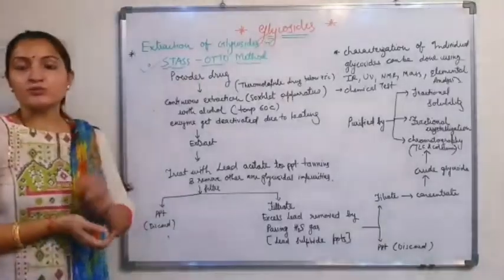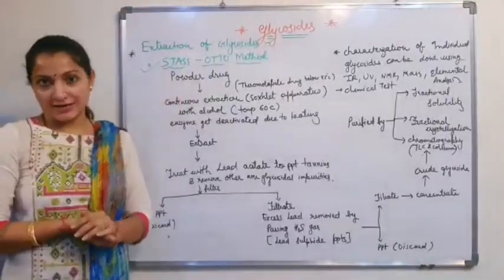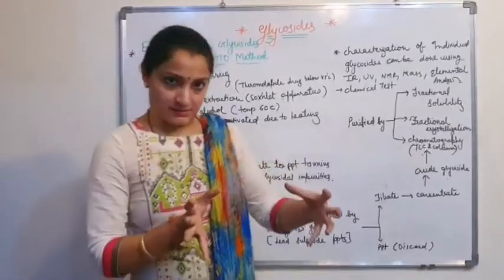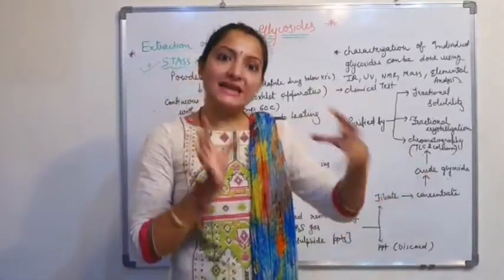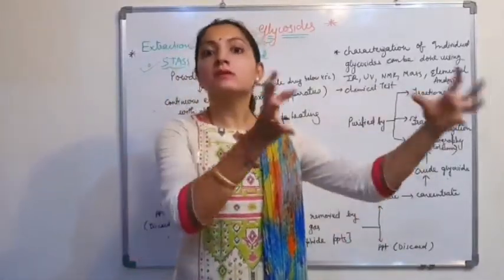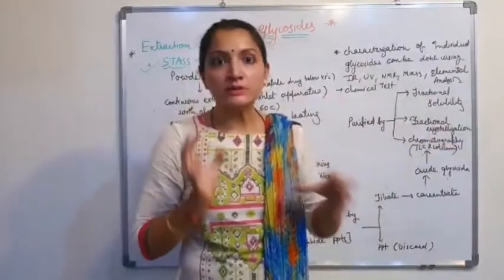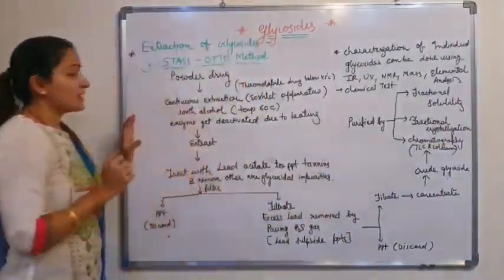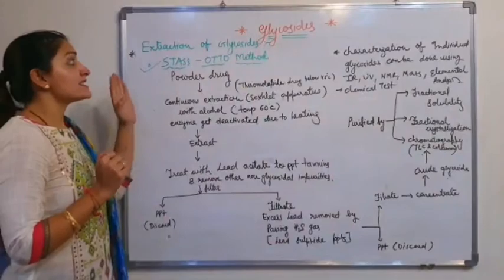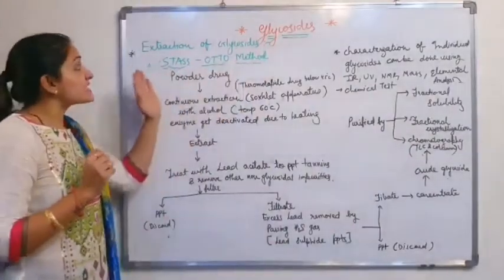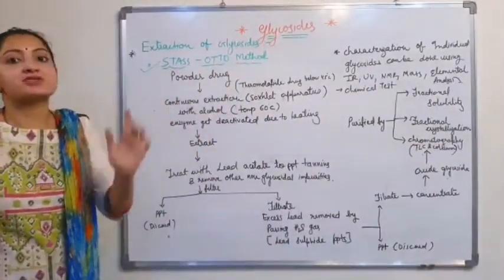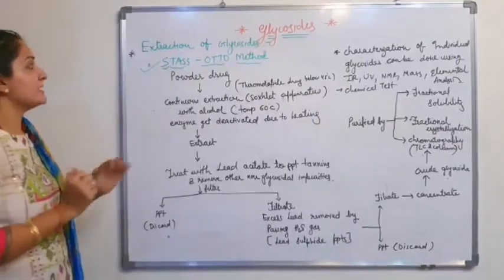Moving on to the next topic, which is the extraction of glycosides. How can we extract or separate out glycosides from drug or plant material? The method is called the Stahl method, which is the most important extraction method for your examinations.